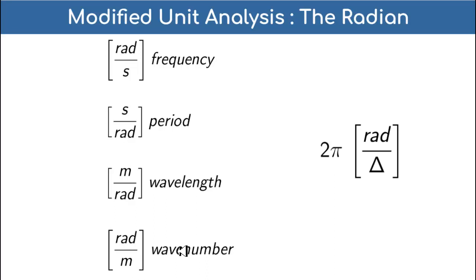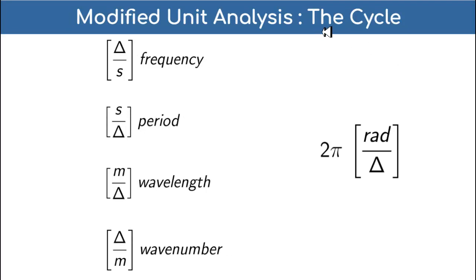In modified unit analysis, the unit of 2 pi is not a unitless number - the units of 2 pi are radians per cycle. As you may know from my previous videos, I don't actually work in the domain of the radian; I actually work in the domain of the cycle. I'm trying to do all of physics in the domain of the cycle. So when I talk about angular momentum, I'm actually going to be talking about circular momentum - I'm going to use the term circular momentum when I'm in the domain of the cycle.